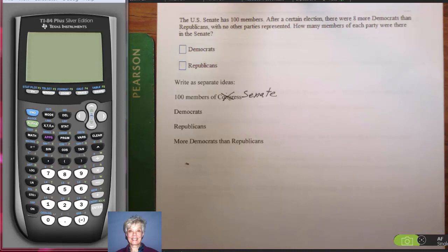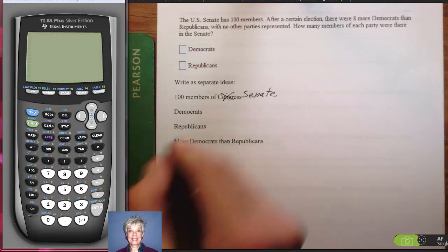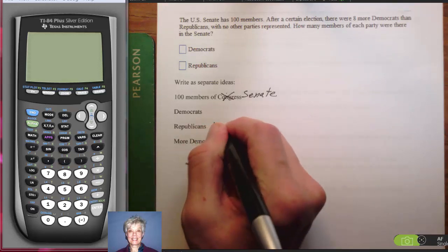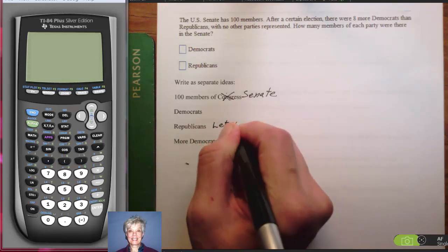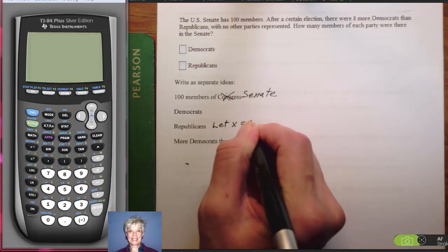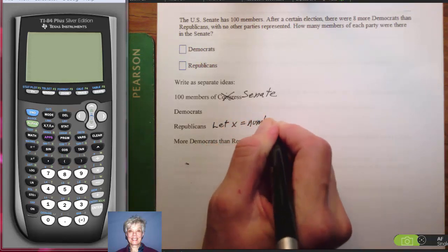Well, we're told in here that there are 8 more Democrats than Republicans. So, notice that the number of Democrats is based on the number of Republicans. 8 more than the number of Republicans. How many Republicans are there? I don't know. I am going to let X equal the number of Republicans.